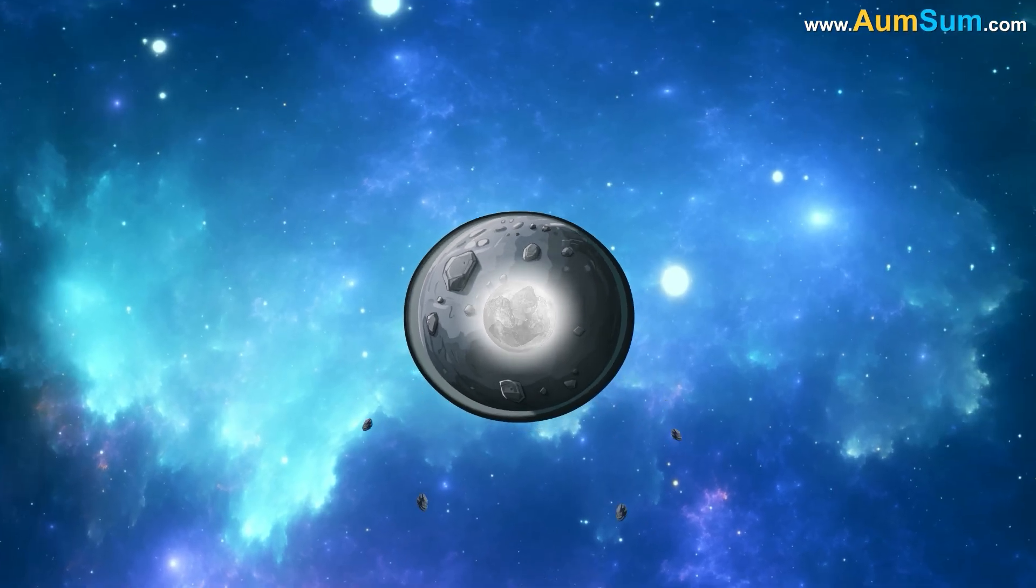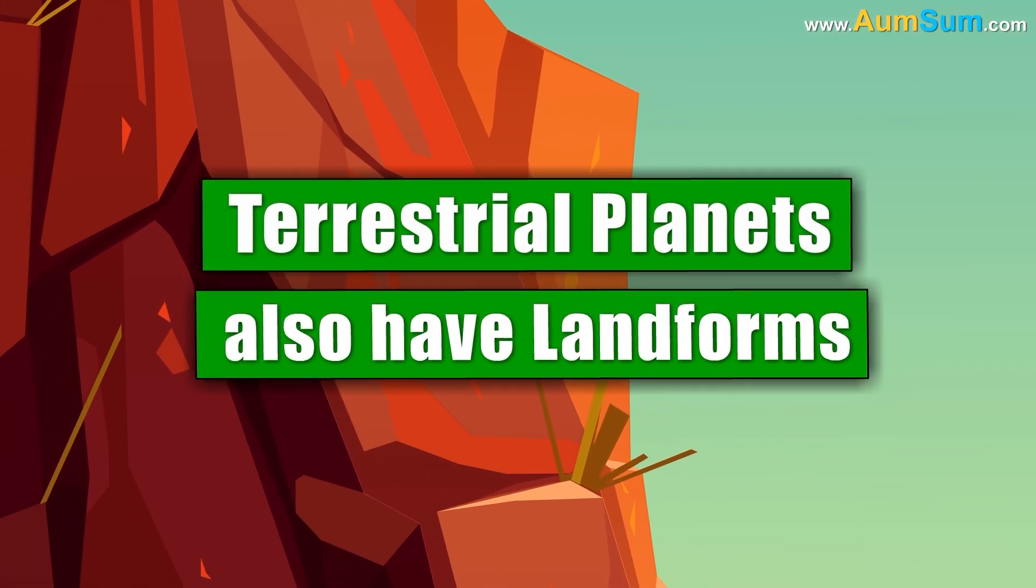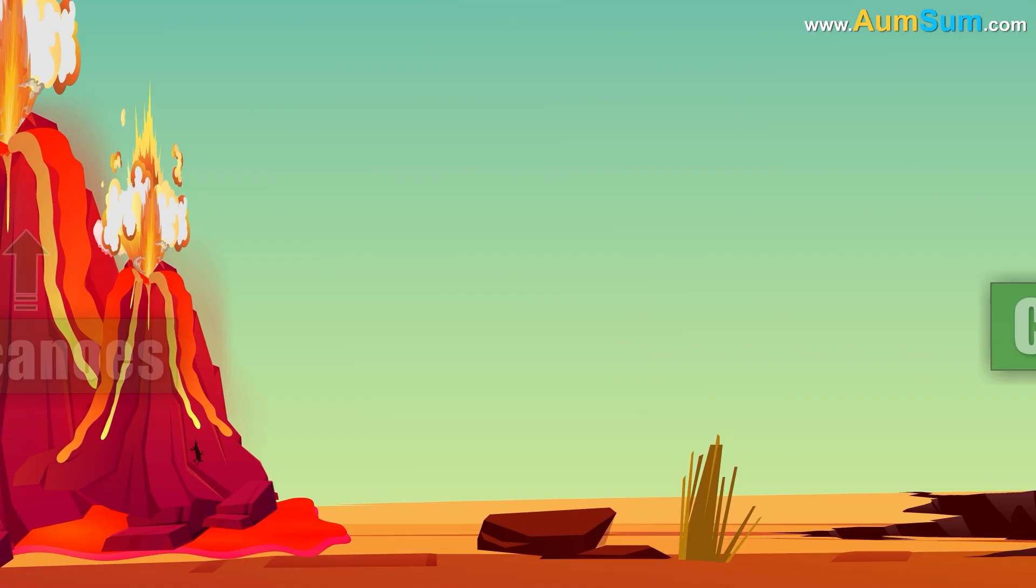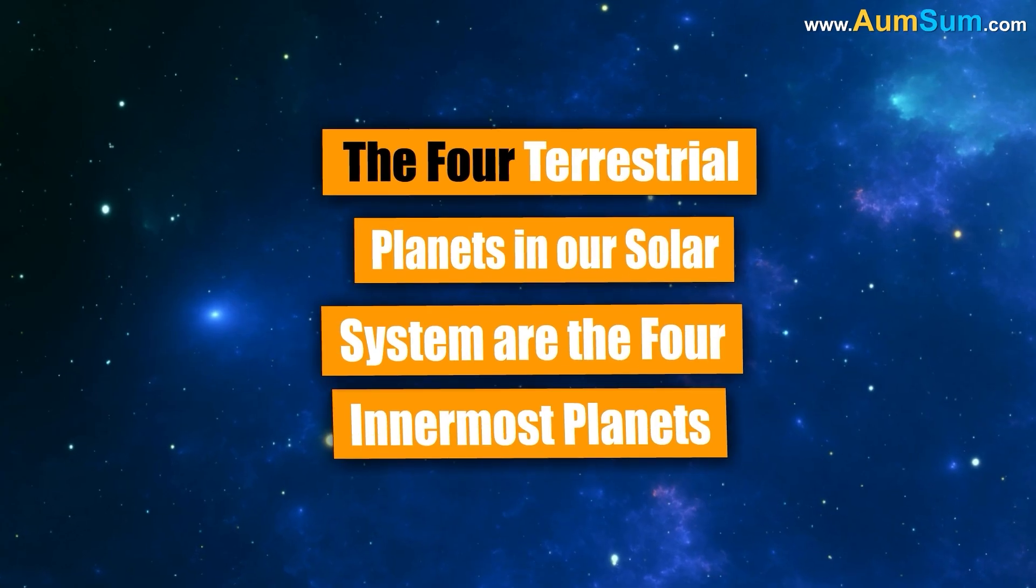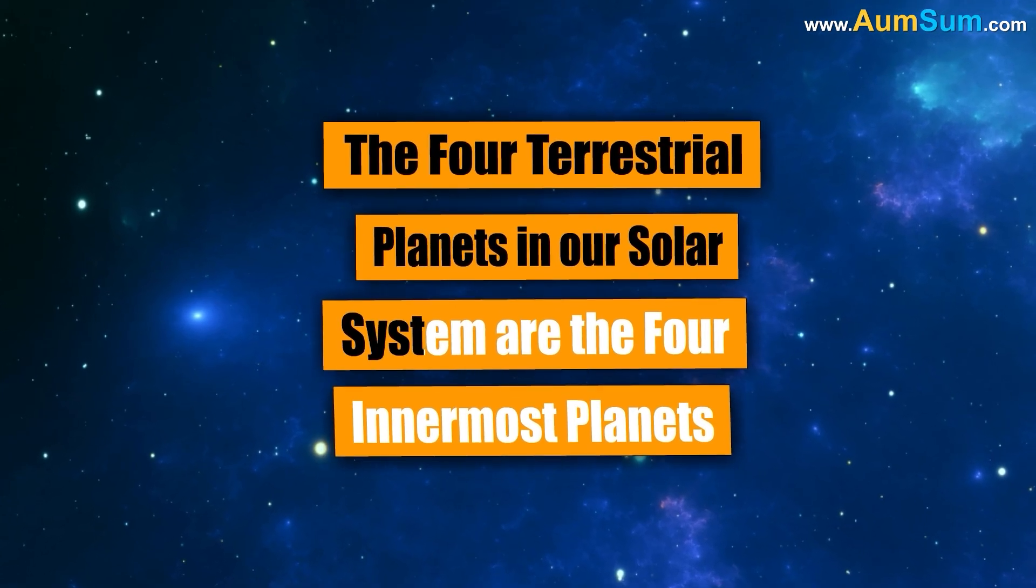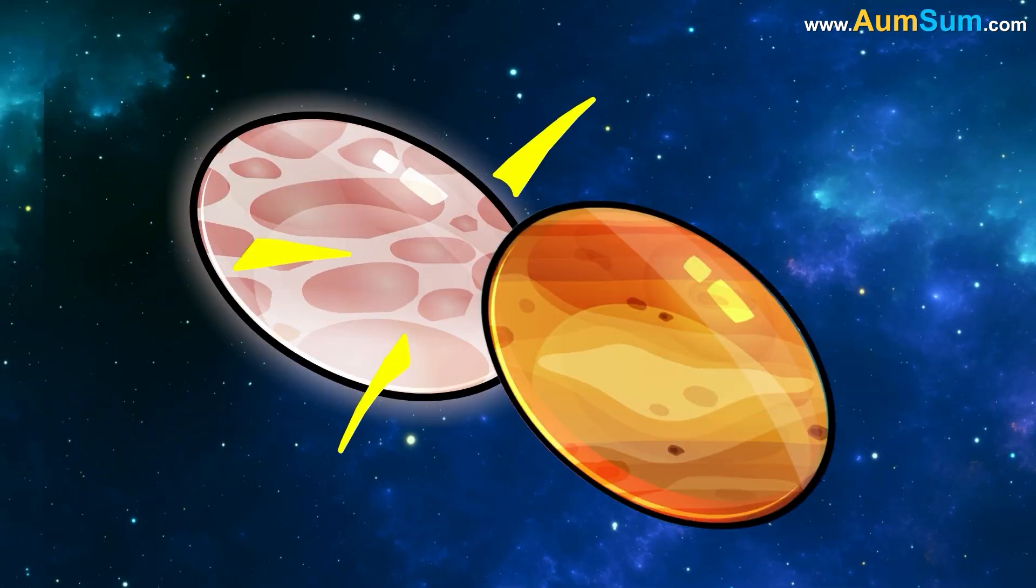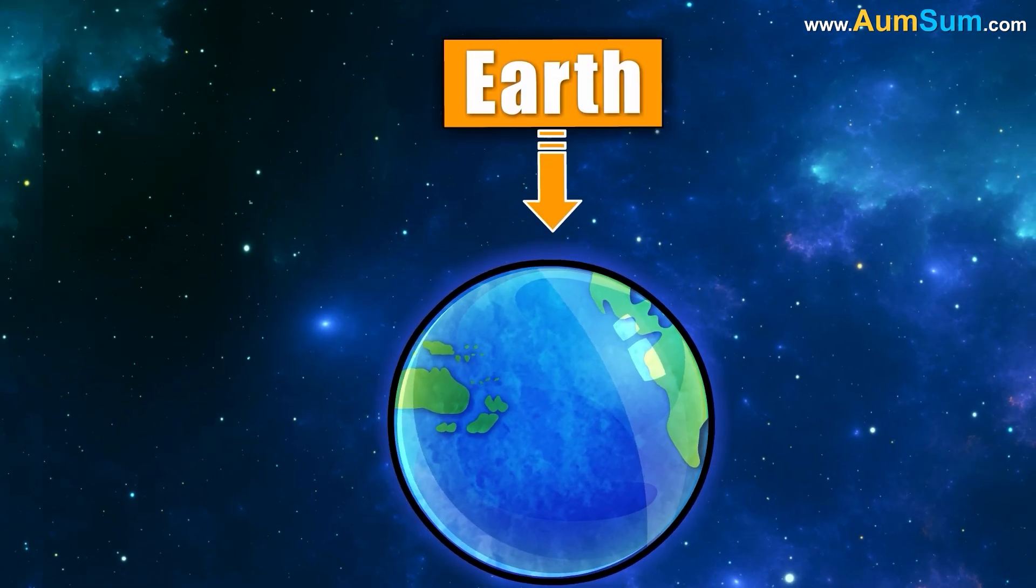The mantle is usually the largest part of the planet by volume. Terrestrial planets also have landforms like cliffs, valleys, volcanoes, and craters. The four terrestrial planets in our solar system are the four innermost planets: Mercury, Venus, Earth, and Mars.